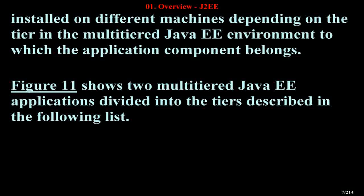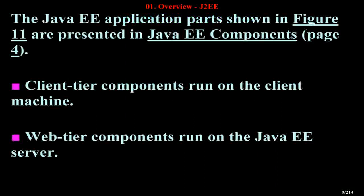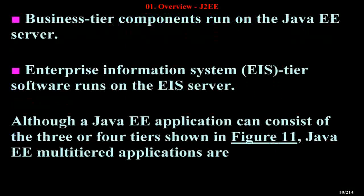Figure 11 shows two multi-tiered Java EE applications divided into the following tiers: client-tier components run on the client machine; web-tier components run on the Java EE server; business-tier components run on the Java EE server; and Enterprise Information System (EIS)-tier software runs on the EIS server.